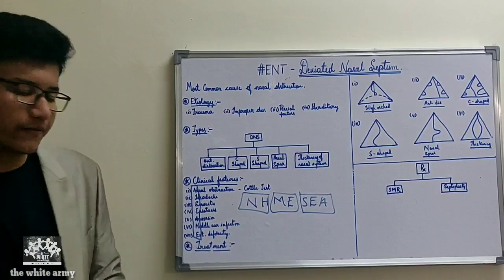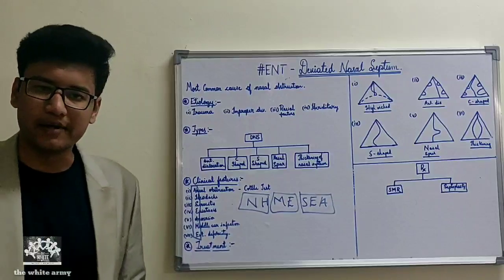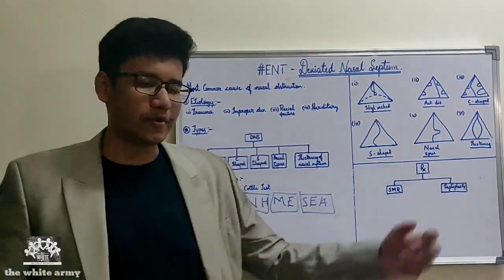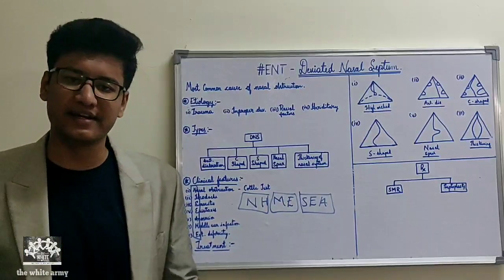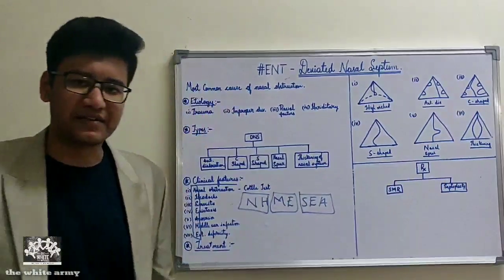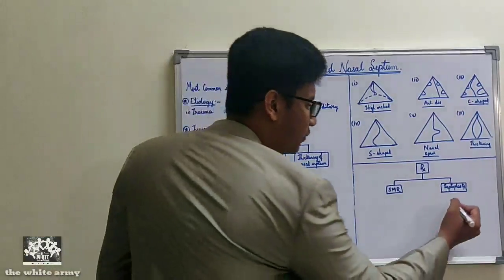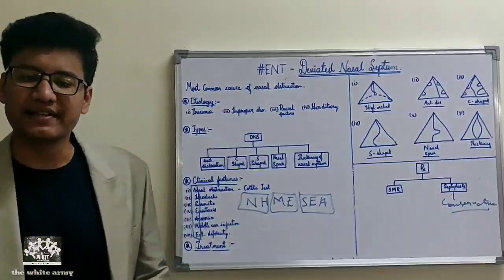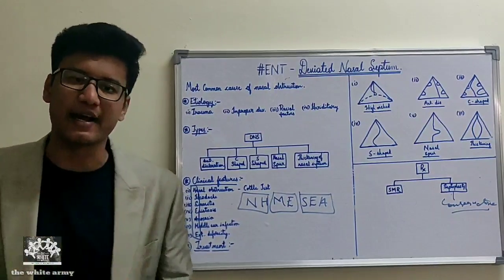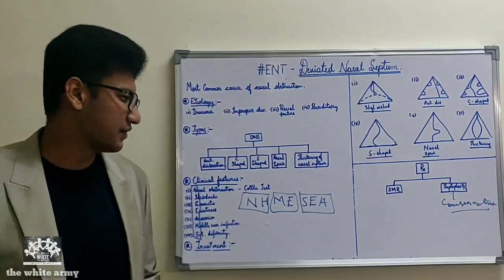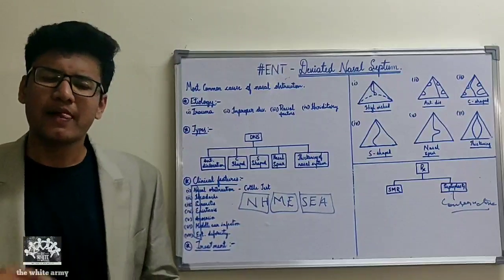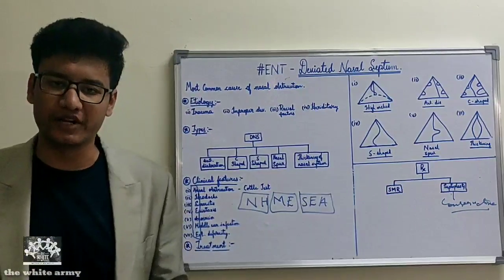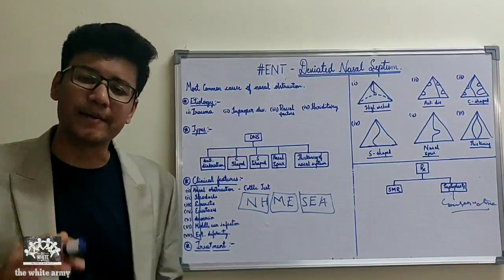The main treatments for DNS are SMR (submucosal resection) and septoplasty. Septoplasty is the more conservative mode of treatment — only a small part of the nasal septum is surgically resected and most of the septum is left intact, which is favorable for patients. In SMR, most of the nasal septum is removed, making it a more aggressive surgical approach. Nowadays, septoplasty has almost completely replaced SMR.